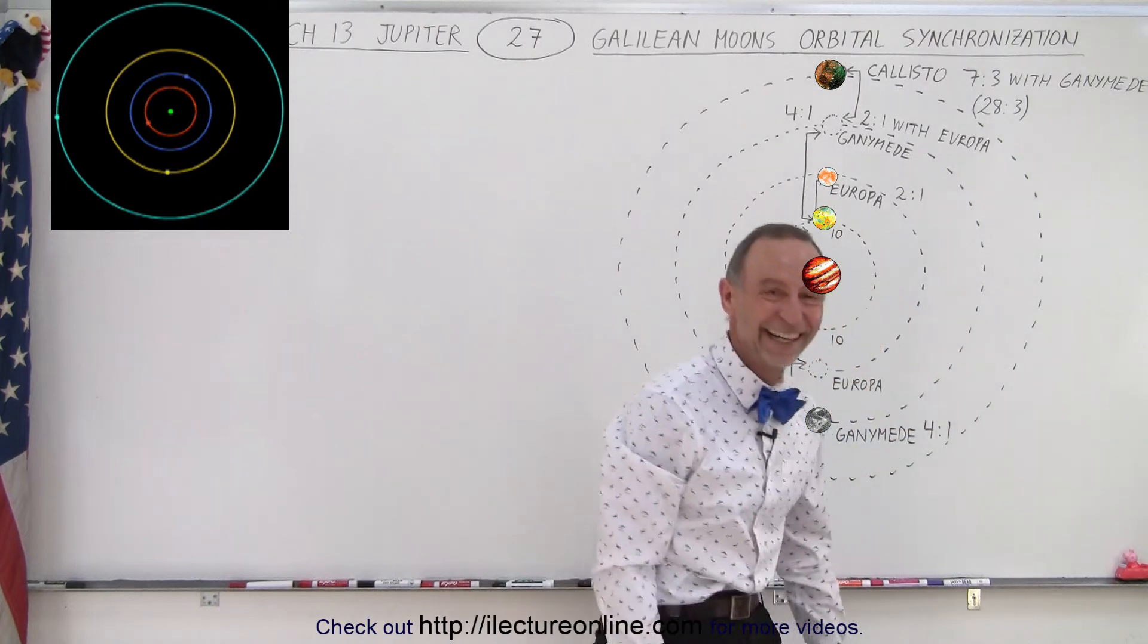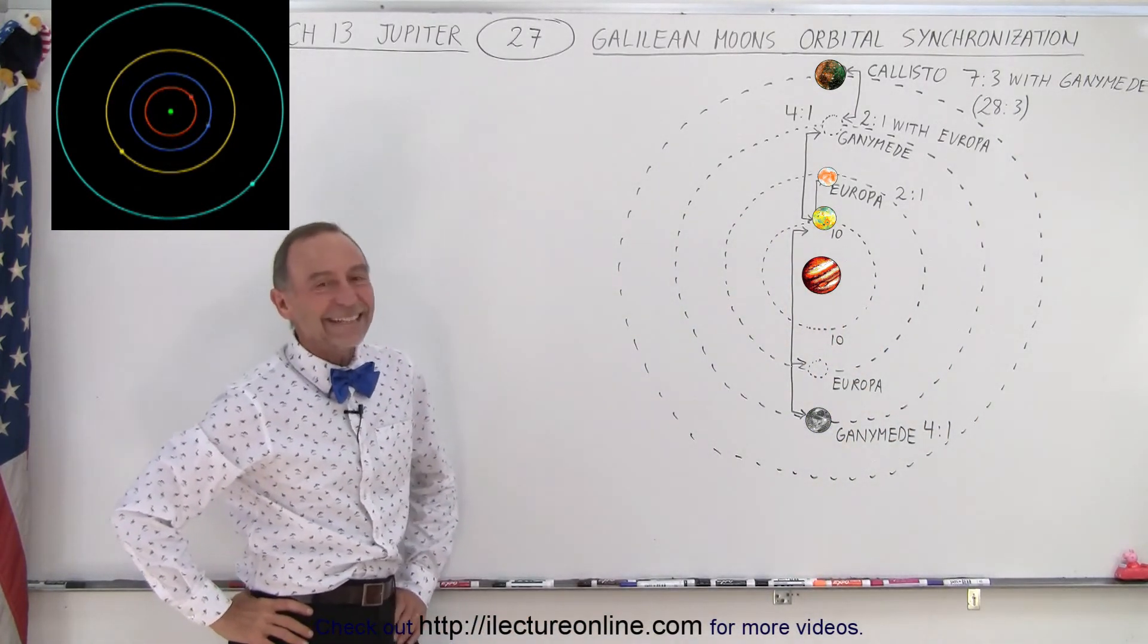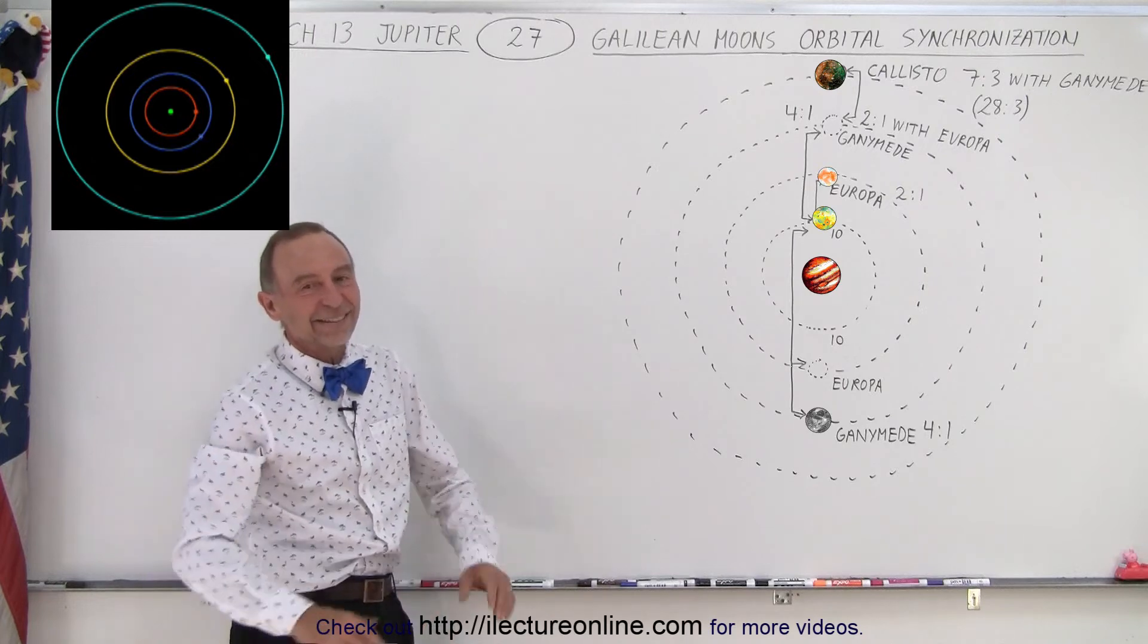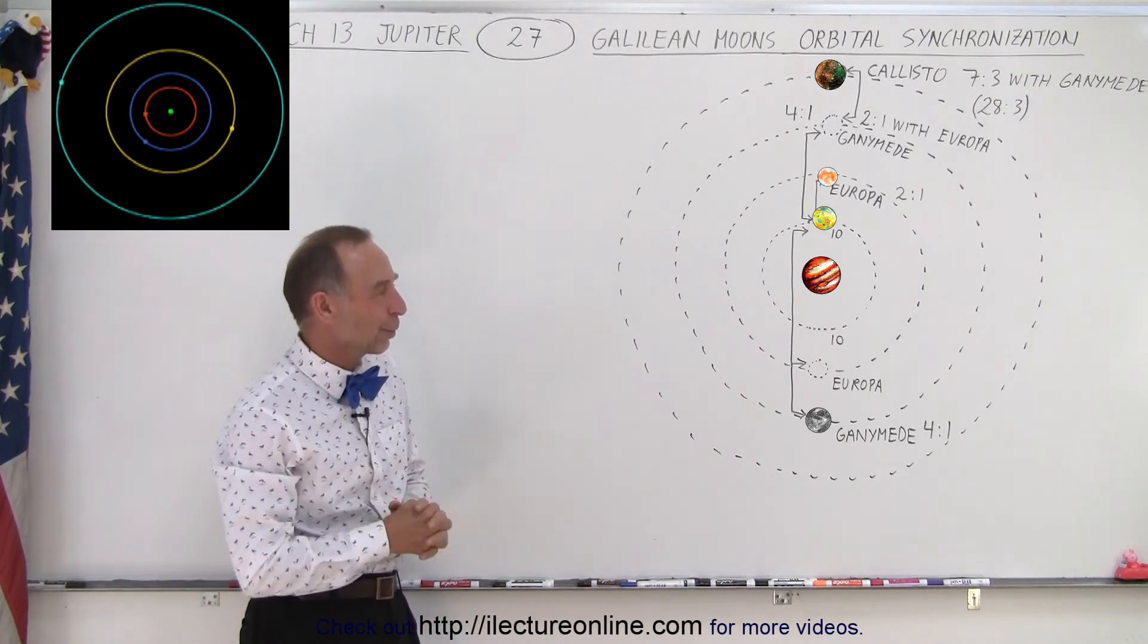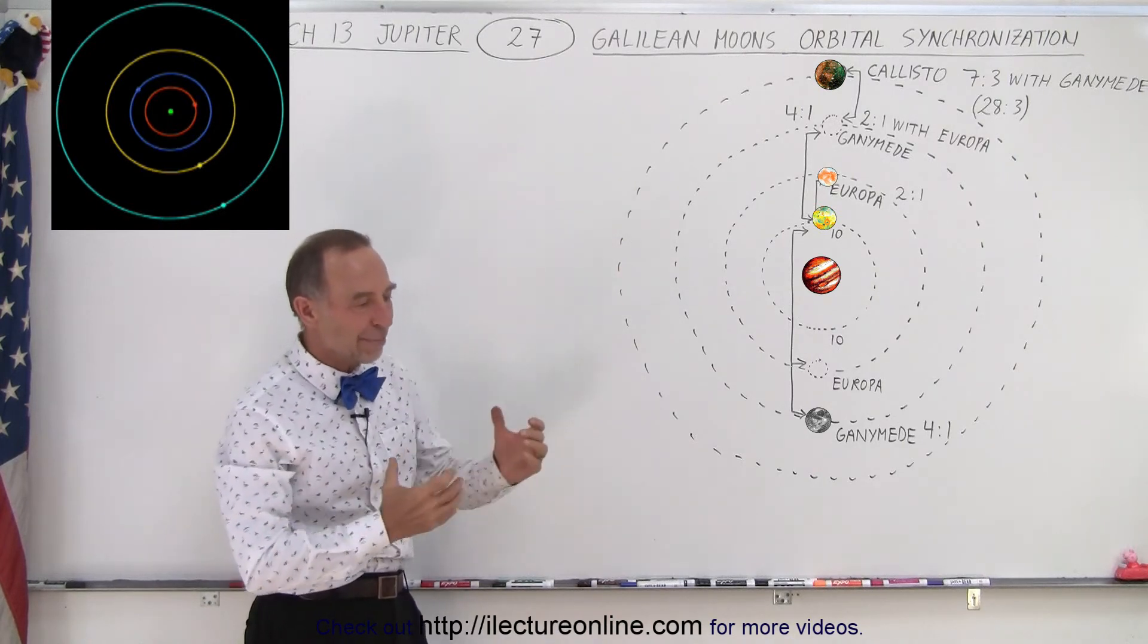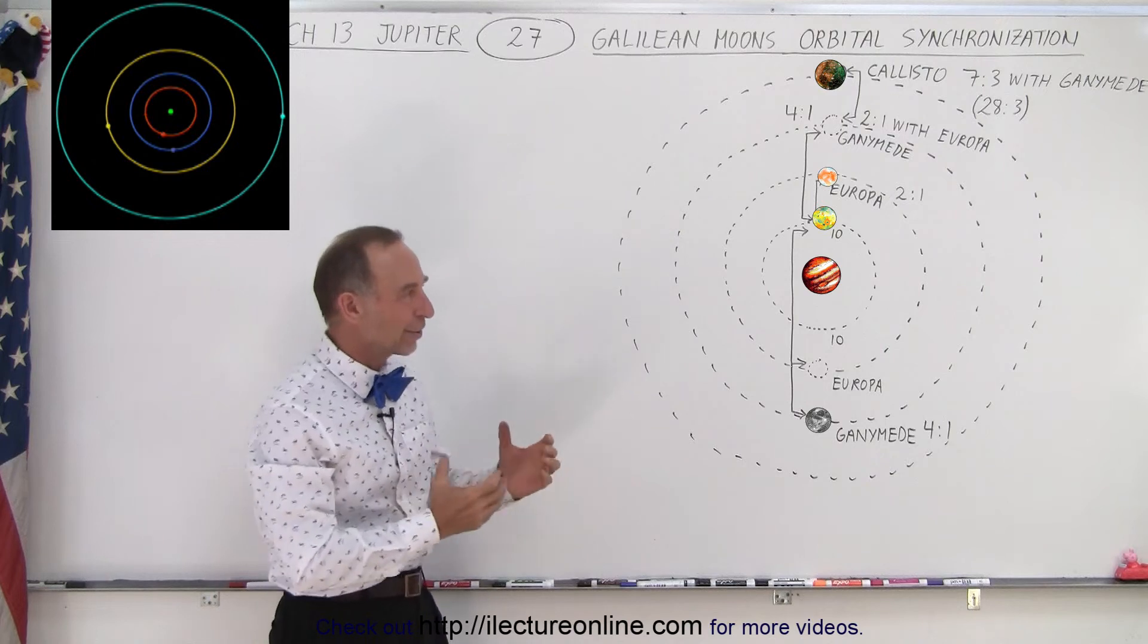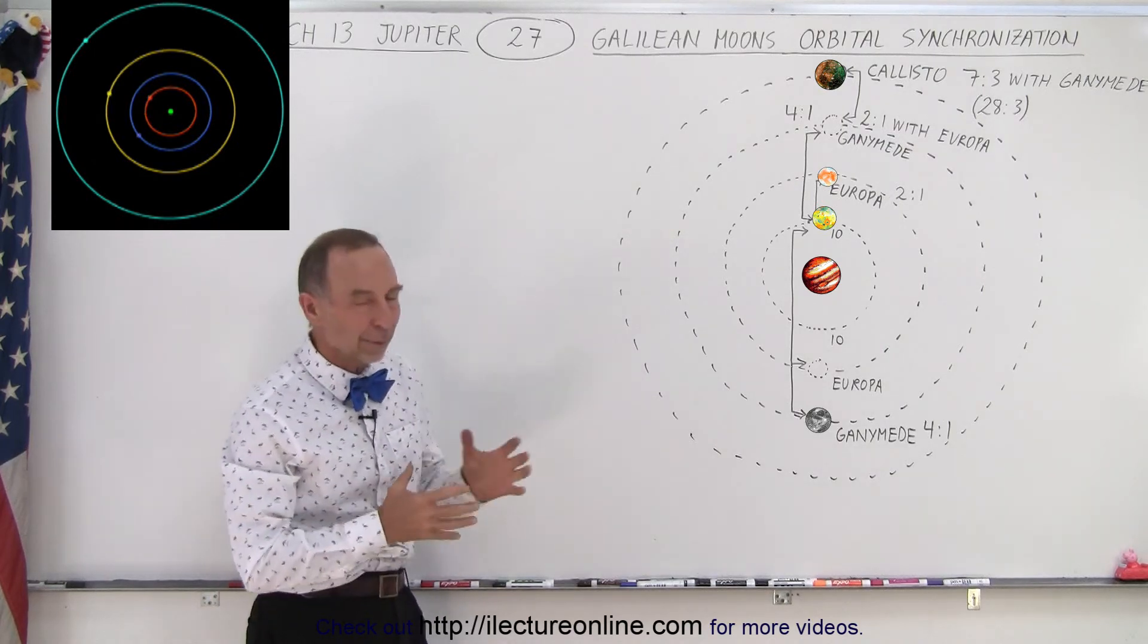Do they ever slightly off? Well, it's not exactly, exactly, exactly. It's not exactly 2 to 1 down to so many decimal places. There's slight difference in the orbital period, but they're very close. And they are always being pulled back to that 2 to 1, 4 to 1, and 28 to 3 relationship.